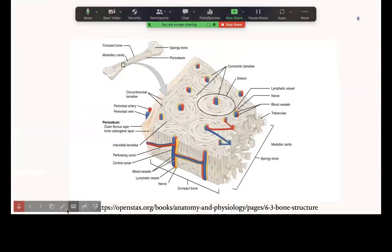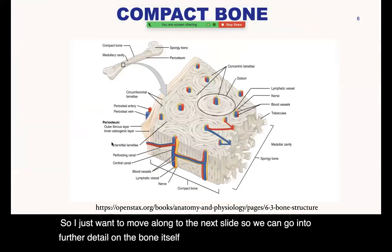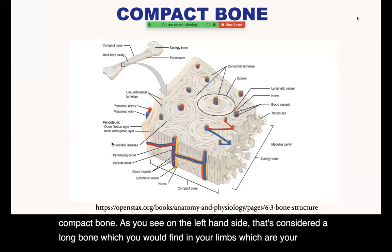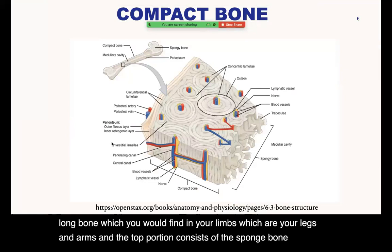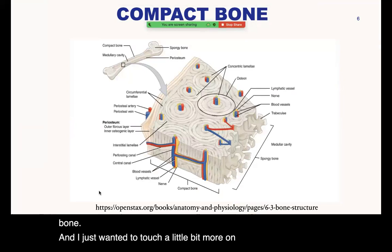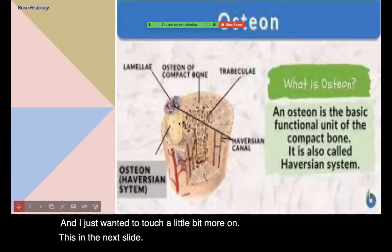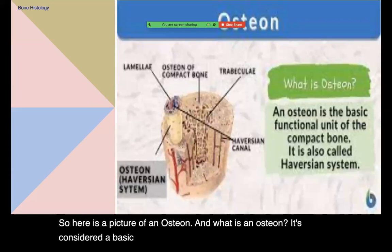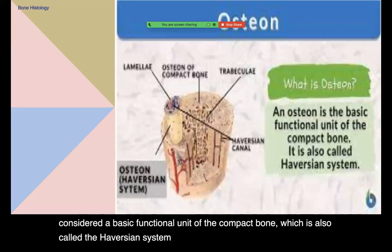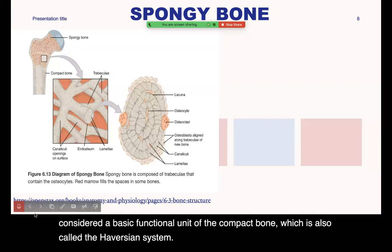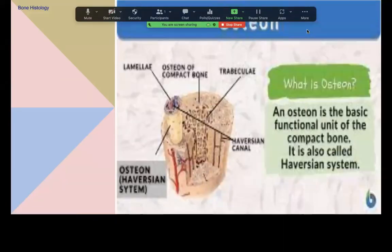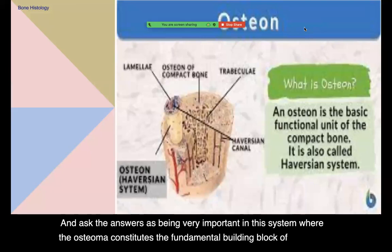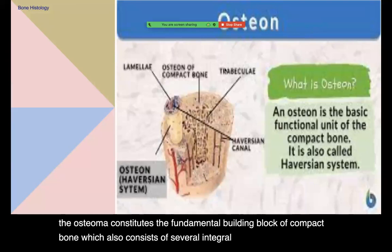Moving along, here is a picture of a long bone on the left-hand side, which you would find in your limbs — your legs and arms — and the top portion consists of spongy bone. Here is a picture of an osteon. An osteon is considered the basic functional unit of compact bone, which is also called the Haversian system. The osteon constitutes the fundamental building block of compact bone, consisting of several integral components.